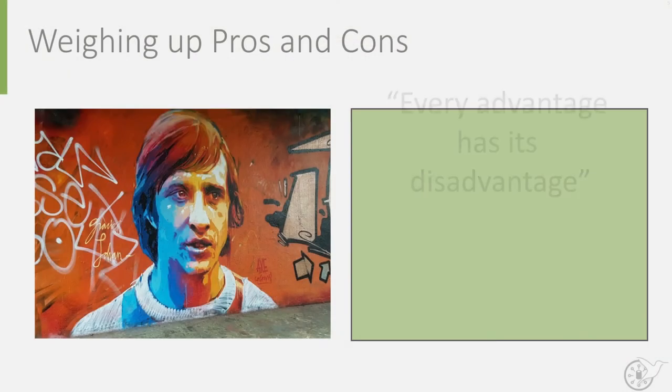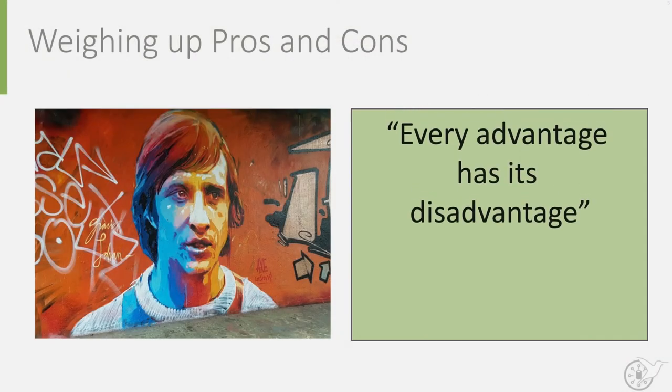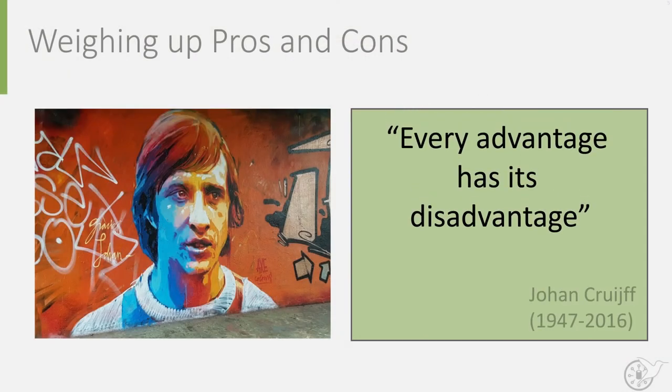To speak with the words of the great Dutch soccer legend Johan Cruijff: every advantage has its disadvantage. Realize there are pros and cons for every material choice or structural solution you choose. For instance, metals are more likely to corrode, but polymers are more susceptible to UV radiation.